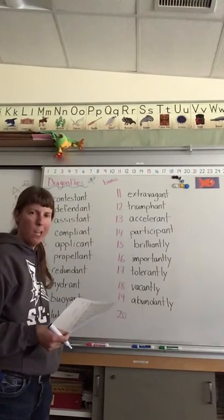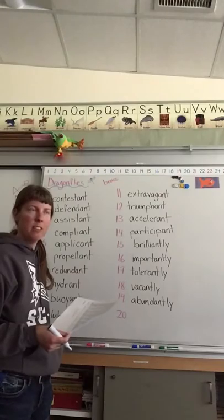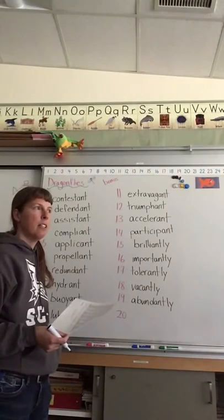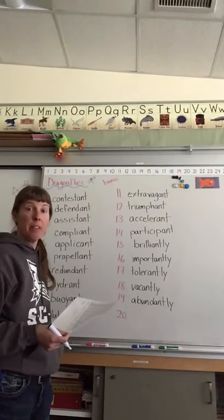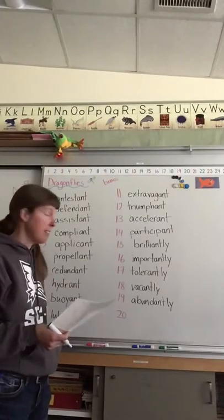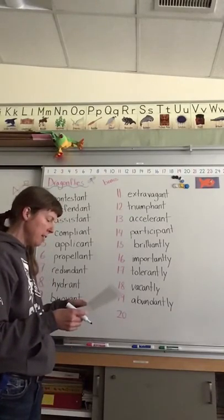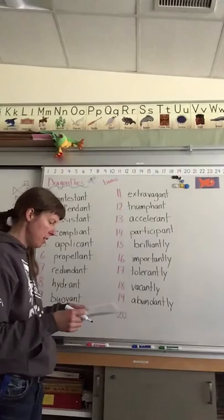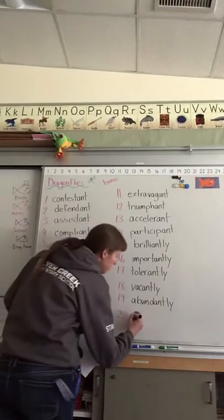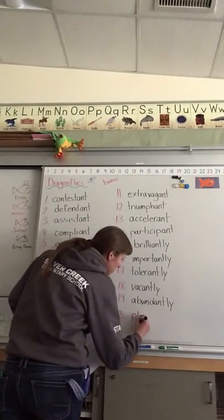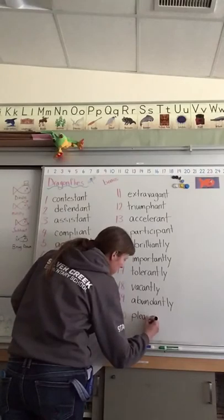Number 19, abundantly. Something that's abundant, there's lots of it. Grass is abundant in our school field. Abundantly means they're behaving in a way that has lots of it.